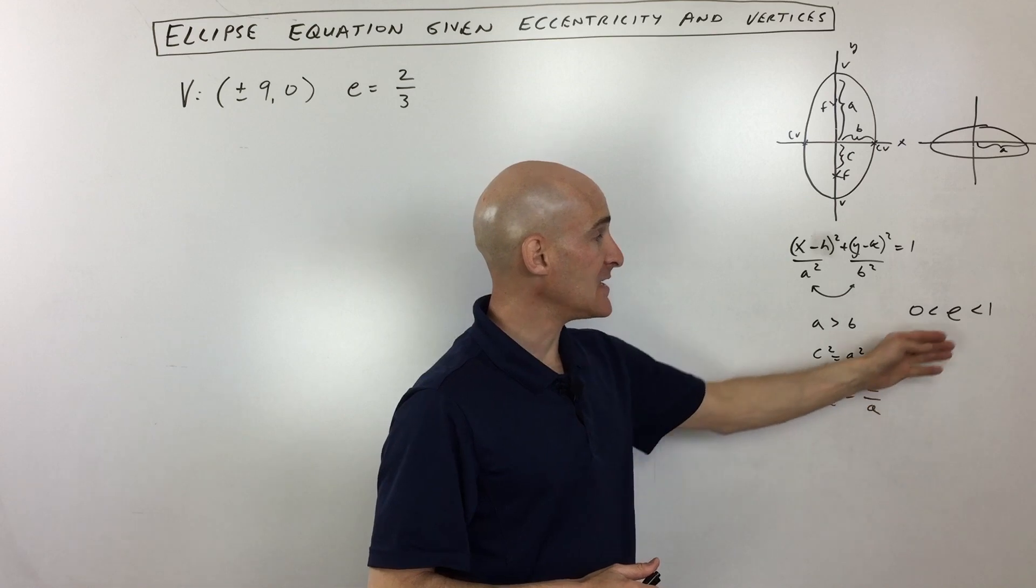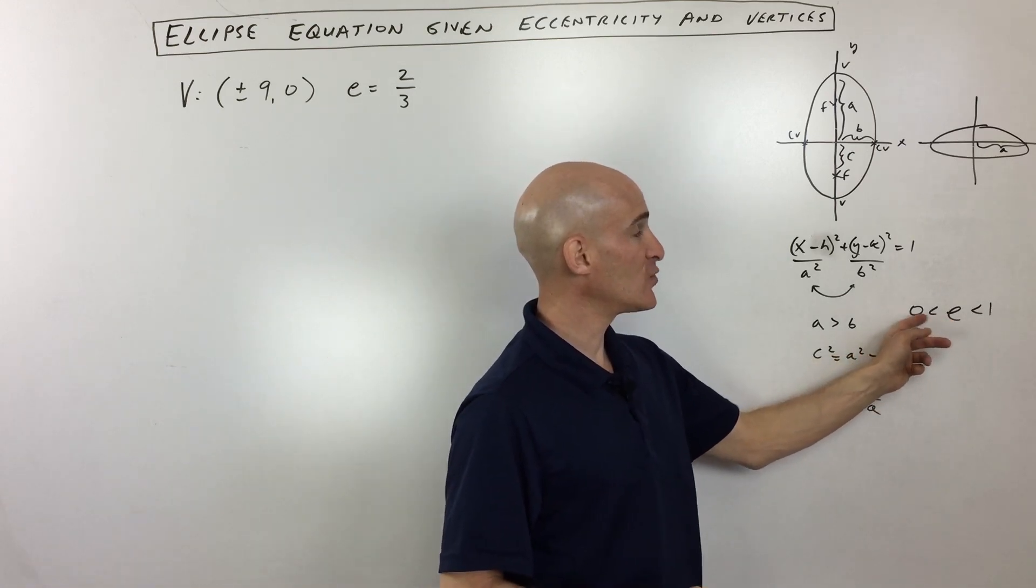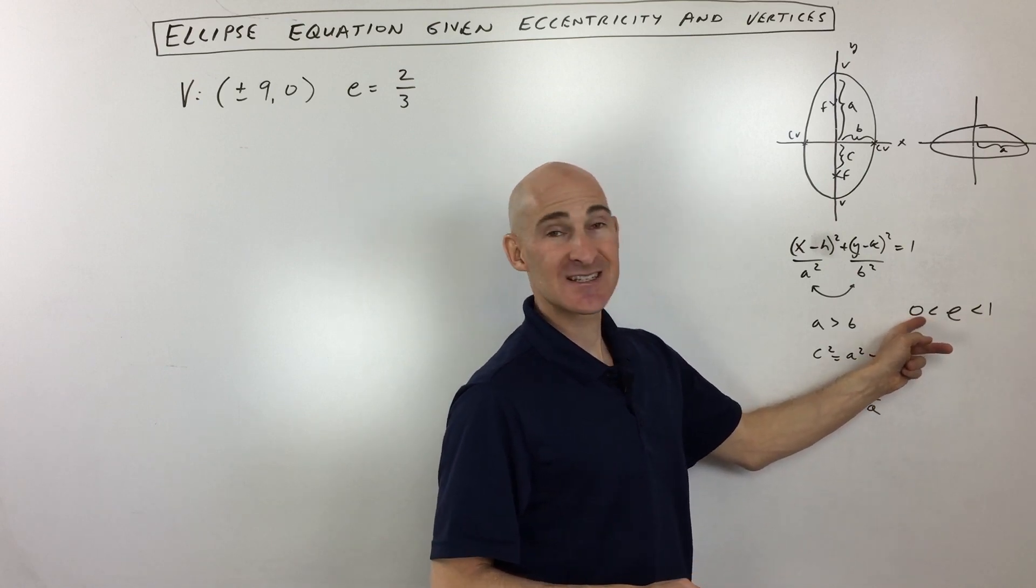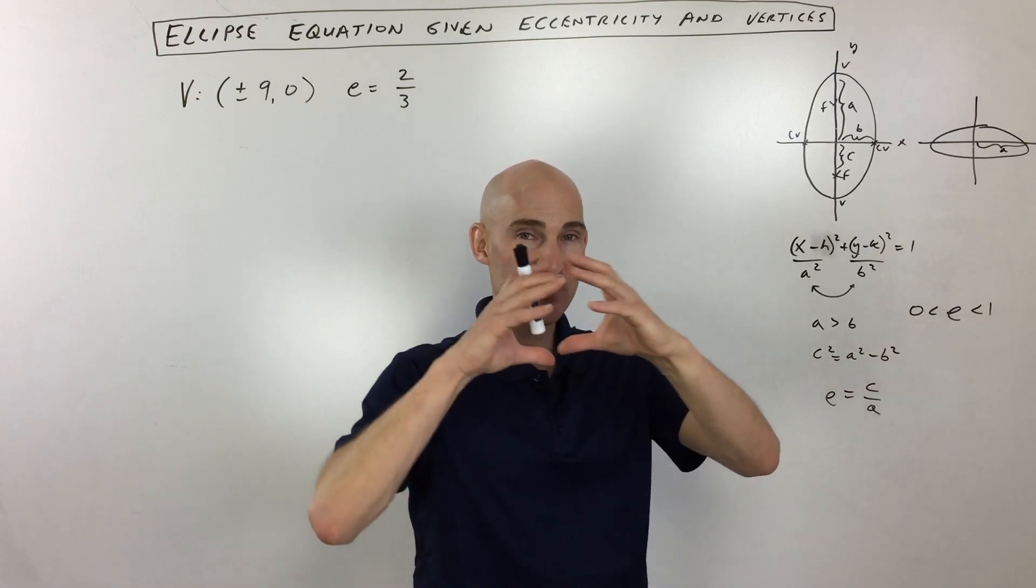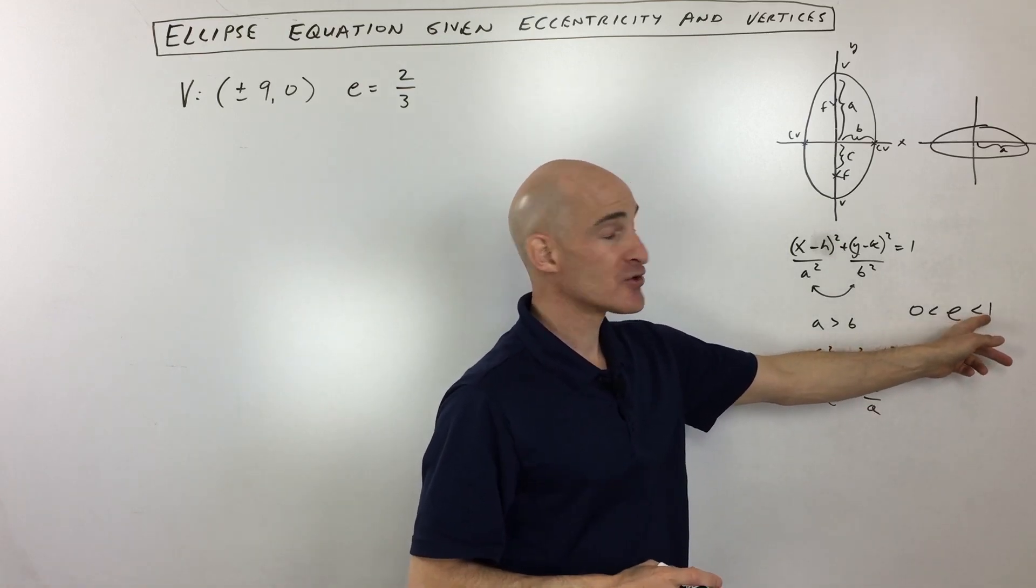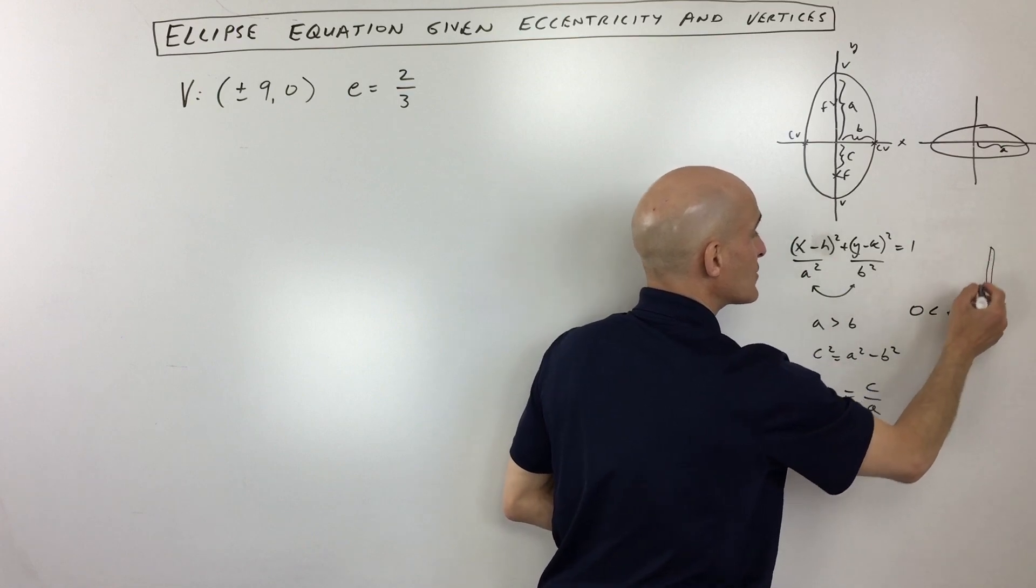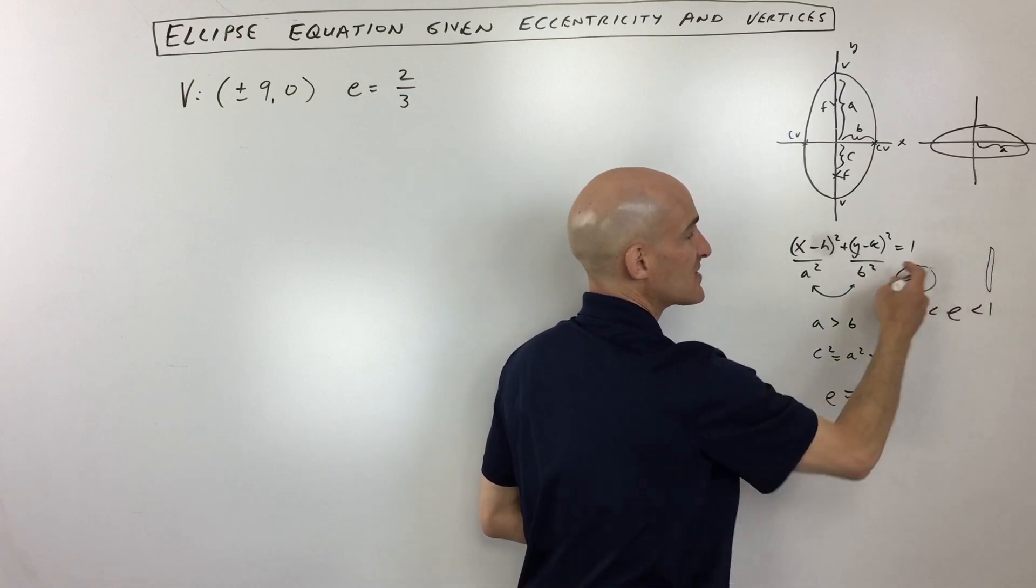And an easy and fun way to kind of remember this is that the eccentricity for an ellipse is between zero and one. The closer the eccentricity gets to zero, the more the ellipse looks like a zero, so like a circle, like the number zero. And the closer it gets to one, the more stretched and thin it is—it looks more like the number one.